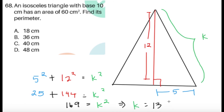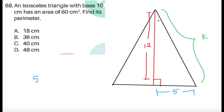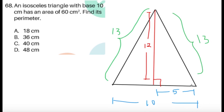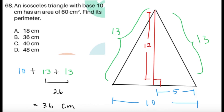Since it's an isosceles triangle, both equal sides are k equals 13. The perimeter is 10 plus 13 plus 13. Thirteen plus thirteen equals 26, and adding 10 gives 36. Don't forget the unit of cm. So the perimeter is 36 cm, and we have choice B as the answer to item 68.